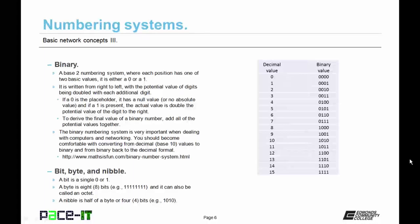And if a one is present, the actual value is double the potential value of the digit to the right. To derive the final value of a binary number, add all of the potential values together, and that will give you the decimal value of the binary number.